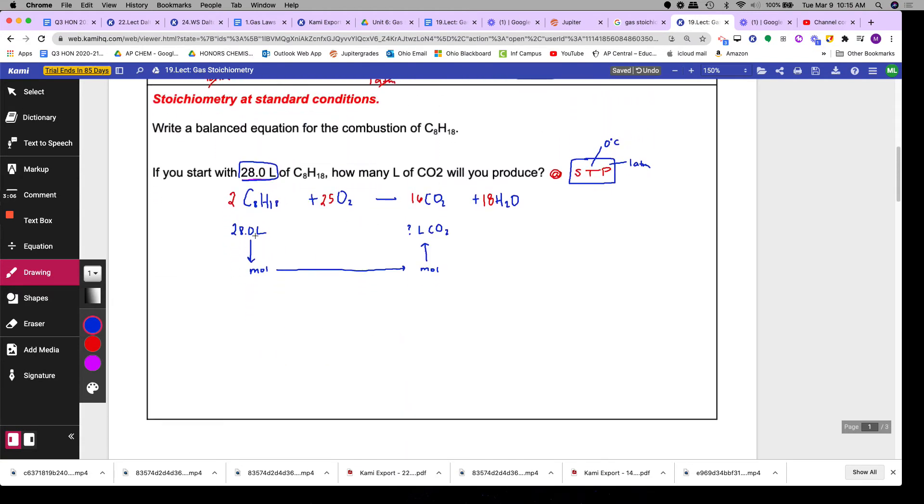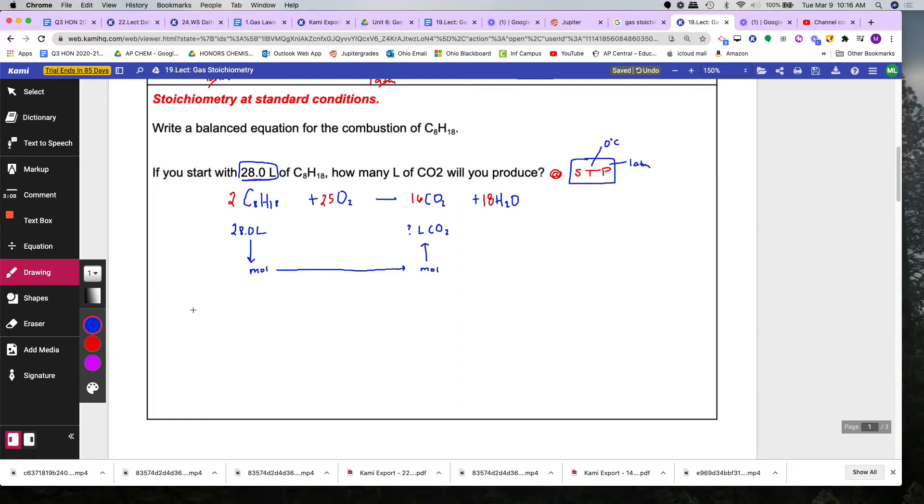Here, you have 28.0 liters, and you want to go to moles. So just write 28.0 liters, C8H18. Because you're at STP, I know I forgot to write it, but this is at STP.